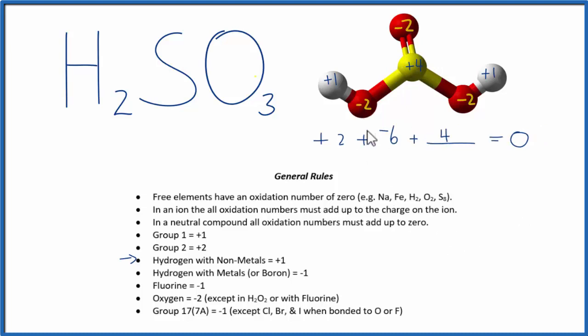So to recap, we found the oxidation numbers for the elements that we knew, for the hydrogens and then the oxygens, and based on those and the fact that everything here in a neutral compound adds up to zero, we could figure out the oxidation number on the sulfur here in the center.